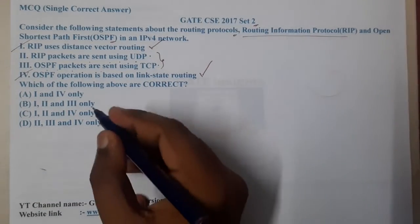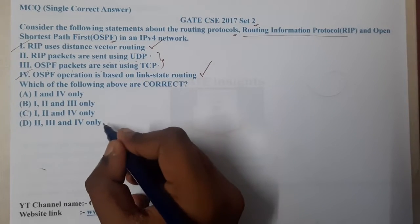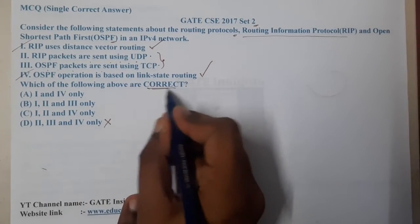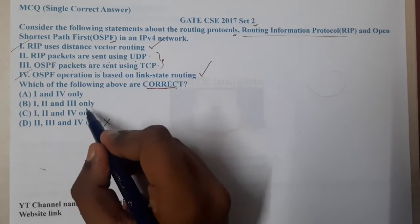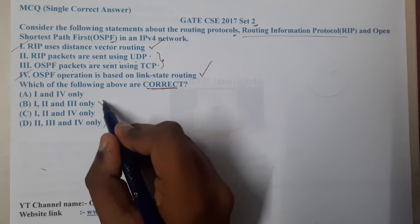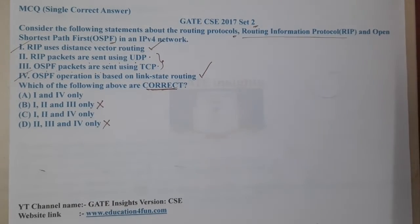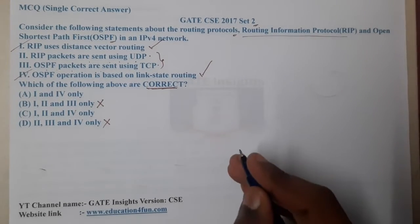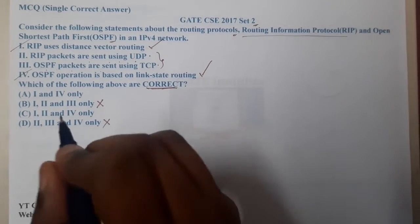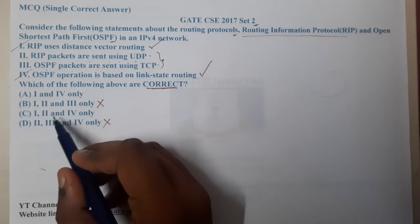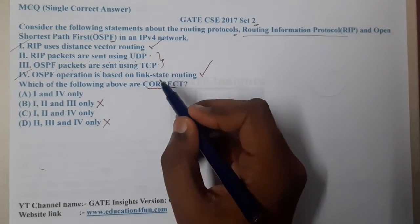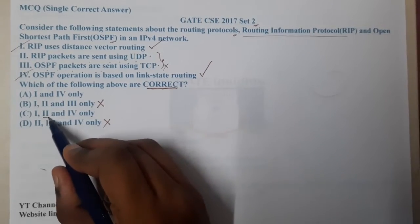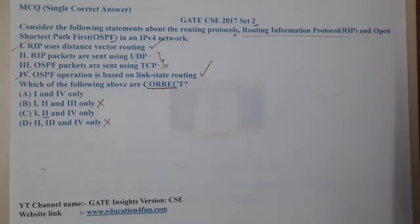Since we know statements I and IV are correct, we can eliminate option D (which doesn't include I) and option B (which includes III). So we are left with options A and C. From here we can directly say that statement III is wrong, so it comes down to whether statement II is correct or not.